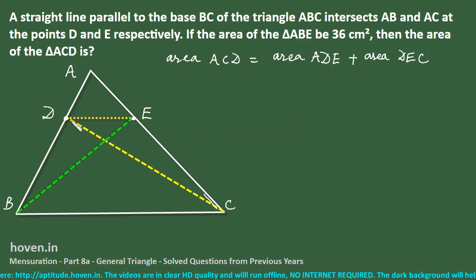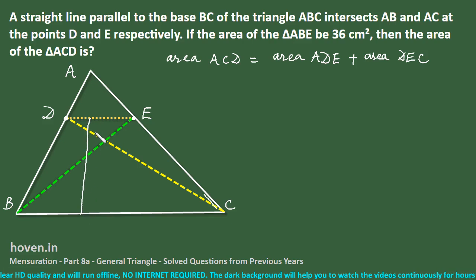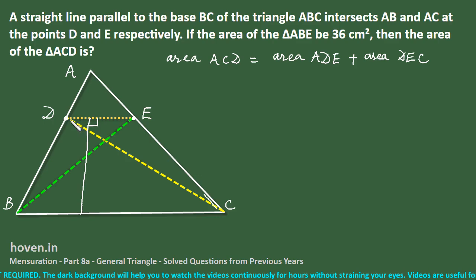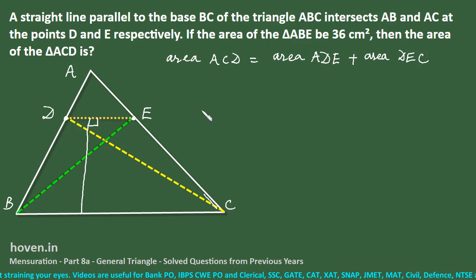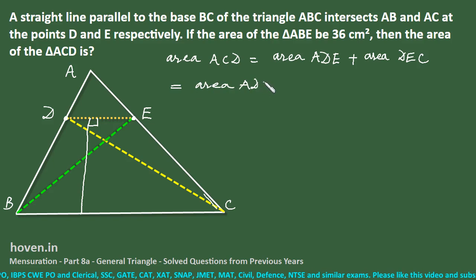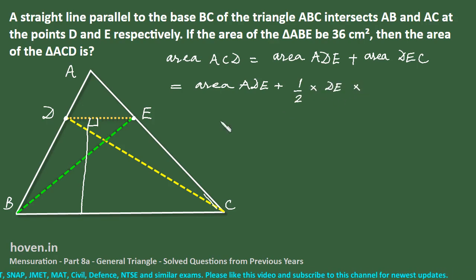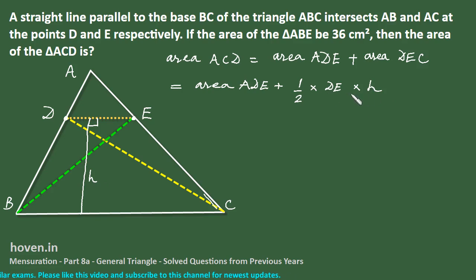We have been given that DE is parallel to BC. If we draw a perpendicular of height H, we can observe that the height of triangle DEC equals this perpendicular H. So the area of DEC equals half of DE multiplied by height H.